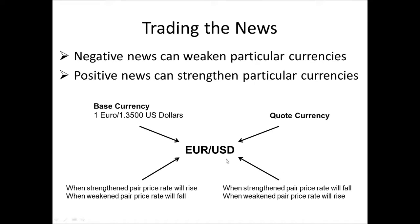The second currency in the pair is referred to as the quote currency. When the base currency is strengthened, the pair price rate will likely rise. If the euro is gaining strength, it could be worth more US dollars — price may go to 1.3510. If the euro is being weakened, the pair price rate may fall, perhaps down to 1.3400. With the quote currency, price moves the opposite way: if the US dollar is being strengthened, one euro will be worth fewer US dollars.